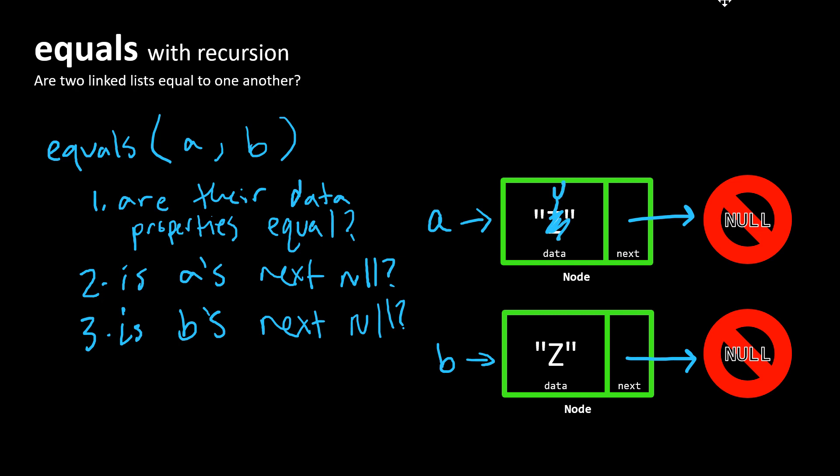If this was Y, let me just change it with the text here. If this is Y, these two lists are not equal to one another because this first condition is going to fail. Their data properties are not equal.